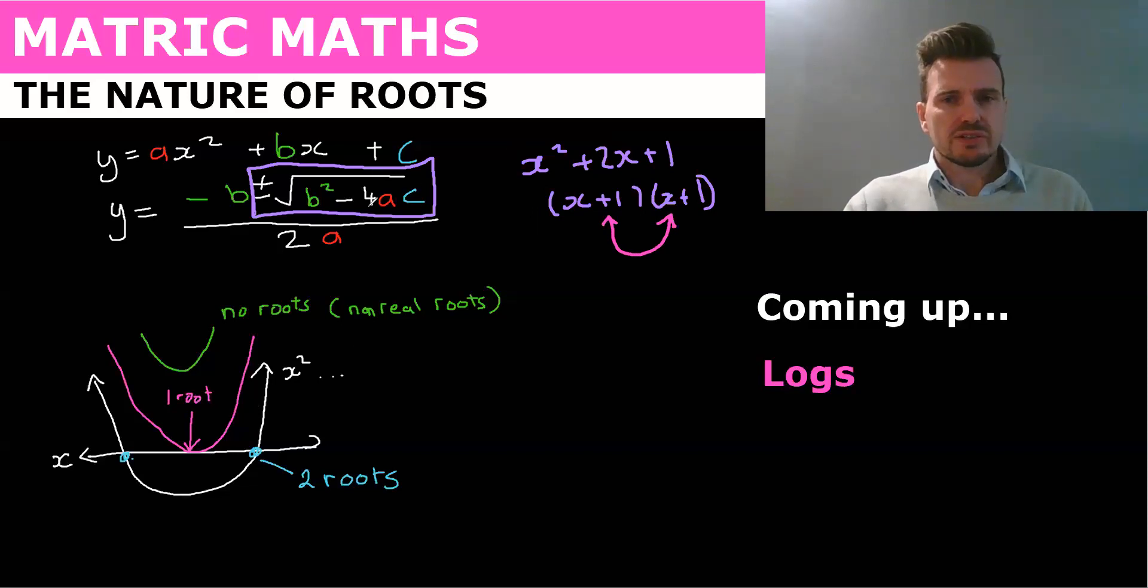So let's look at the nature of roots and how this would affect it. Well, it all comes down to, because there's a plus and minus, this is what gives you your two answers. Because the plus will give you one answer and the minus will give you the other answer.